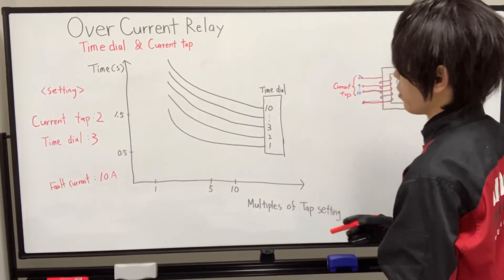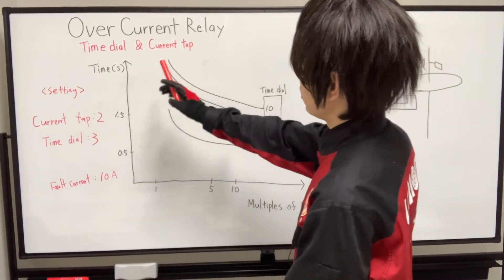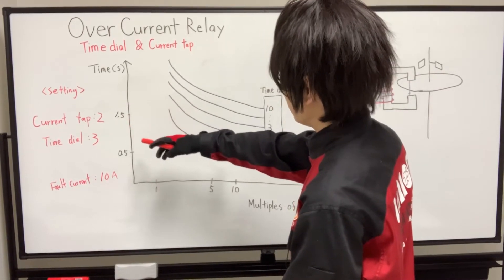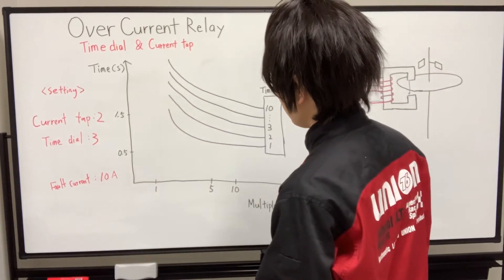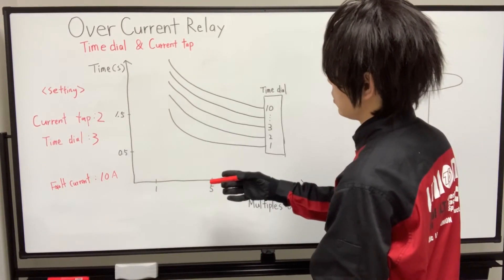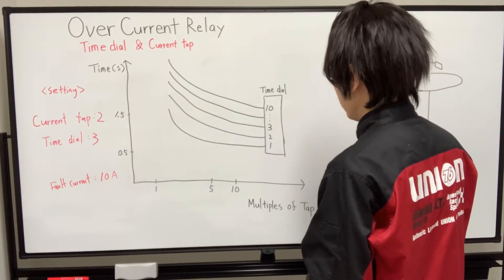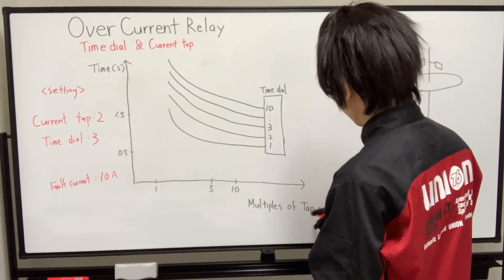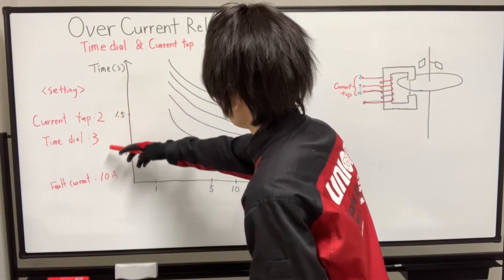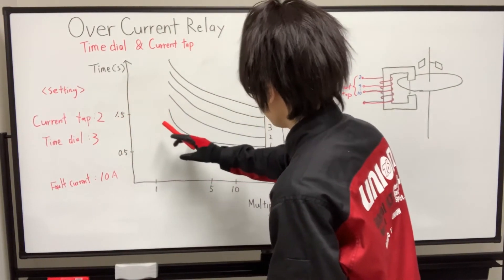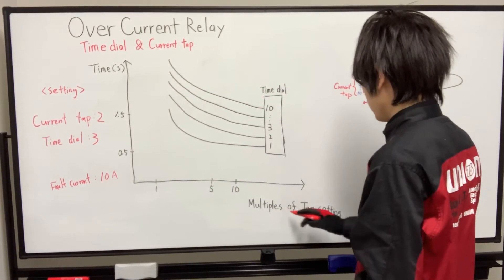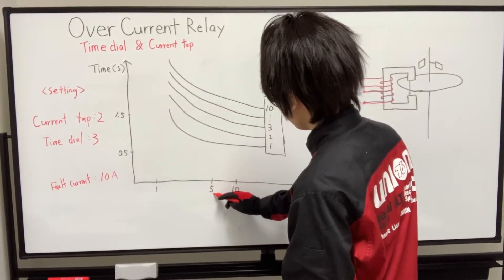OK, so for example, now the current tap is set to number 2, and time dial is set to number 3. And actual fault current is 10A flowing. So the multiple of tap setting - current tap is 2, fault current is 10A, so 5. 2 times 5 is 10A, so the multiple of tap setting is 5.